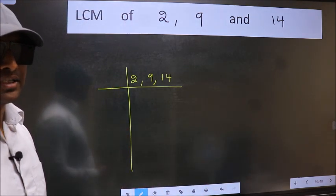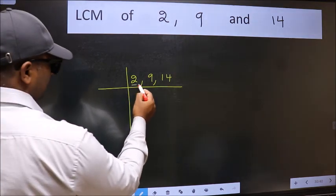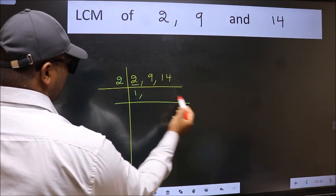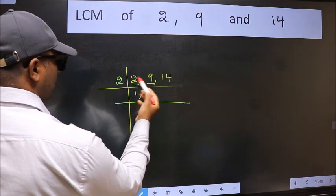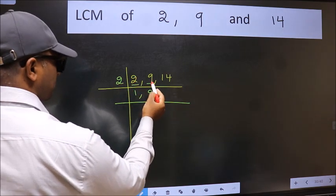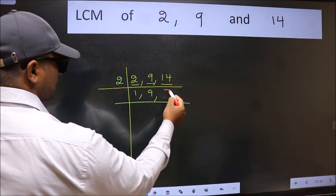Now we should focus on the first number which is 2 here. 2 is a prime number. So 2 into 2. The other number 9 not divisible by 2, so we write it down as it is. The other number 14. When do we get 14 in 2 table? 2 times 7 is 14.